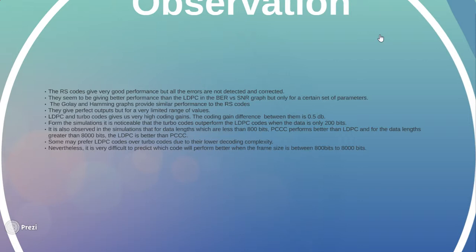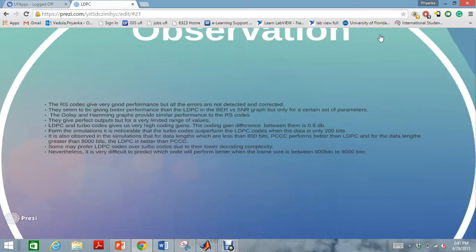It is also observed in the simulations that for data lengths which are less than 800 bits, the turbo codes perform better than LDPC and for the data lengths which are greater than 8000, the LDPC is better than the turbo codes. Some may prefer LDPC or the turbo codes due to their lower decoding complexity. Nevertheless, it is very difficult to predict which code will perform better when the frame sets between 800 bits to 8000 bits.